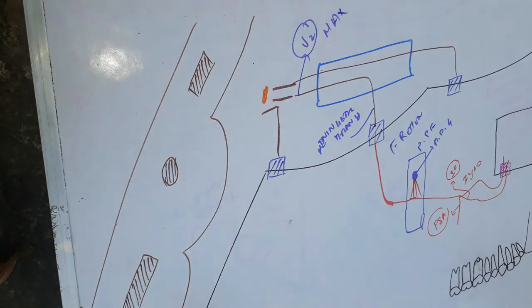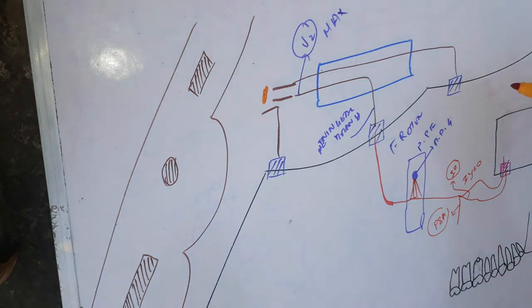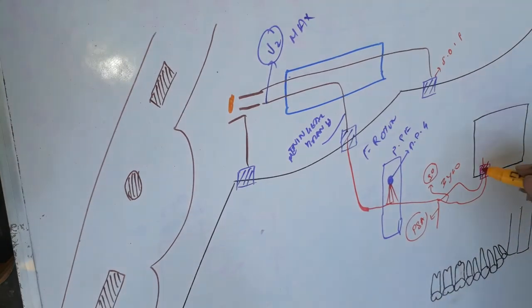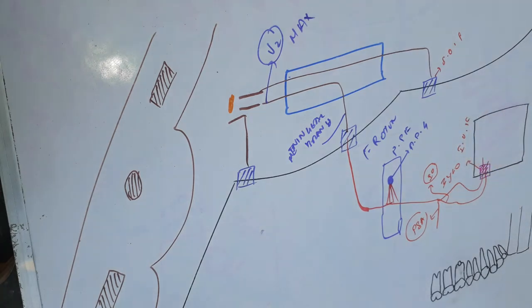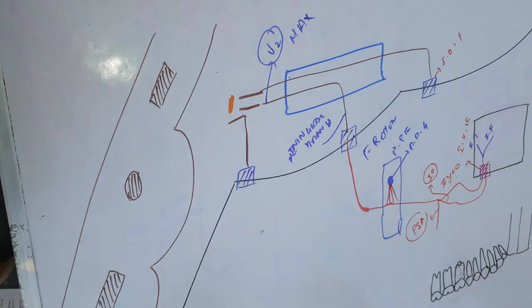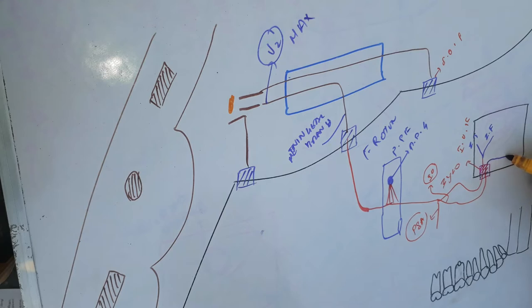The zygomatic nerve and the infraorbital nerve enter through the infraorbital fissure — similar to how the ophthalmic nerve enters the supraorbital fissure. Once the zygomatic nerve enters, it splits into two: zygomaticofacial and zygomaticotemporal. As the name implies, zygomaticotemporal supplies the temple, and zygomaticofacial supplies along the cheek areas.